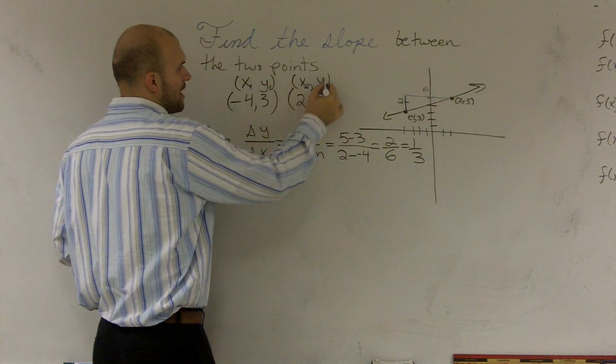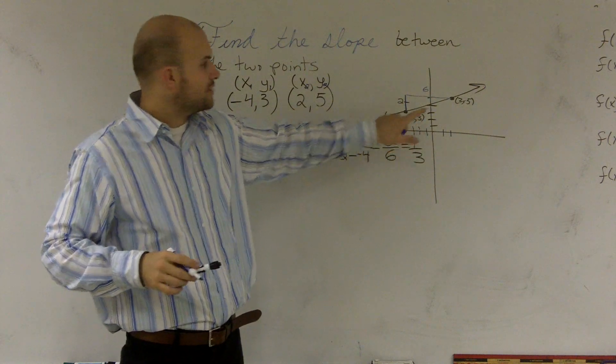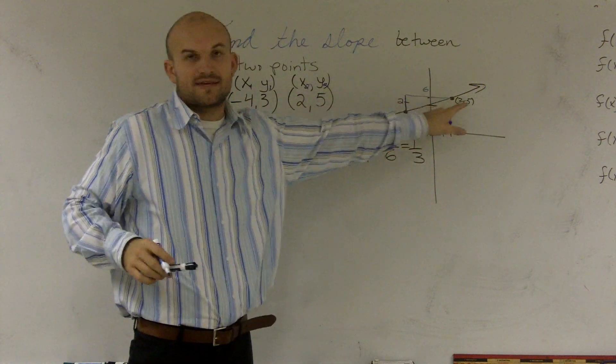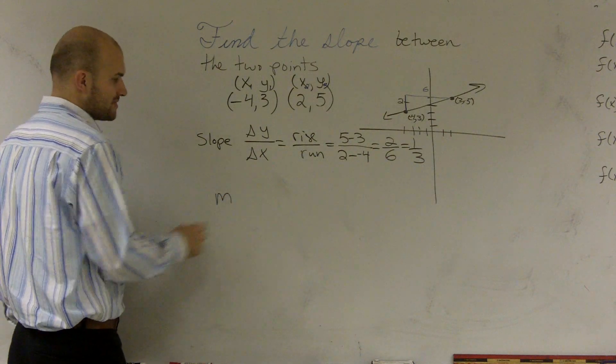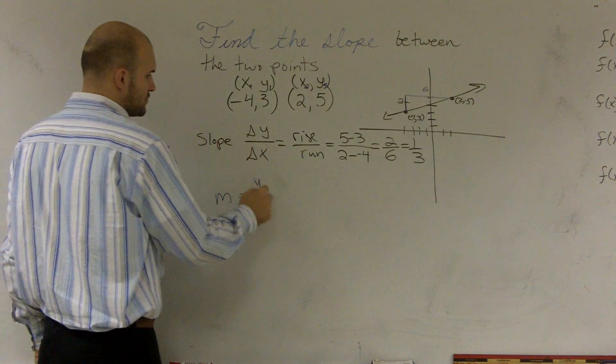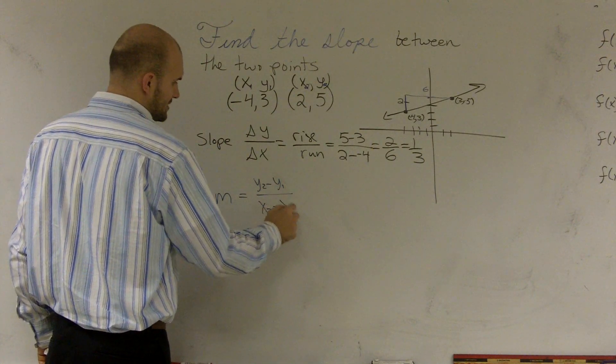And we do the same thing for the y's. This one's y1 represents this y value. This y2 represents this y value. So the slope formula is this. We let m represent slope. Change of y is y2 minus y1 all over x2 minus x1.